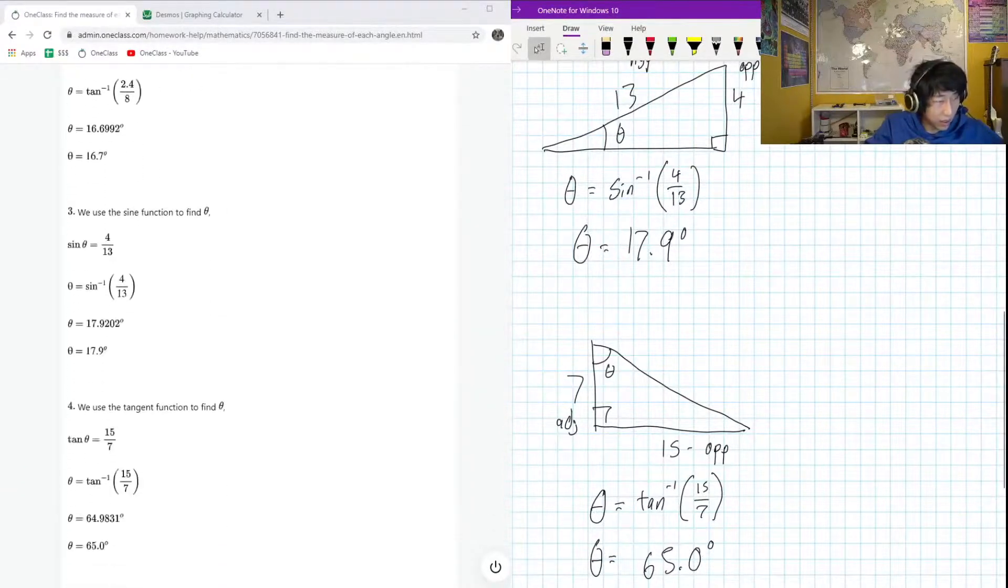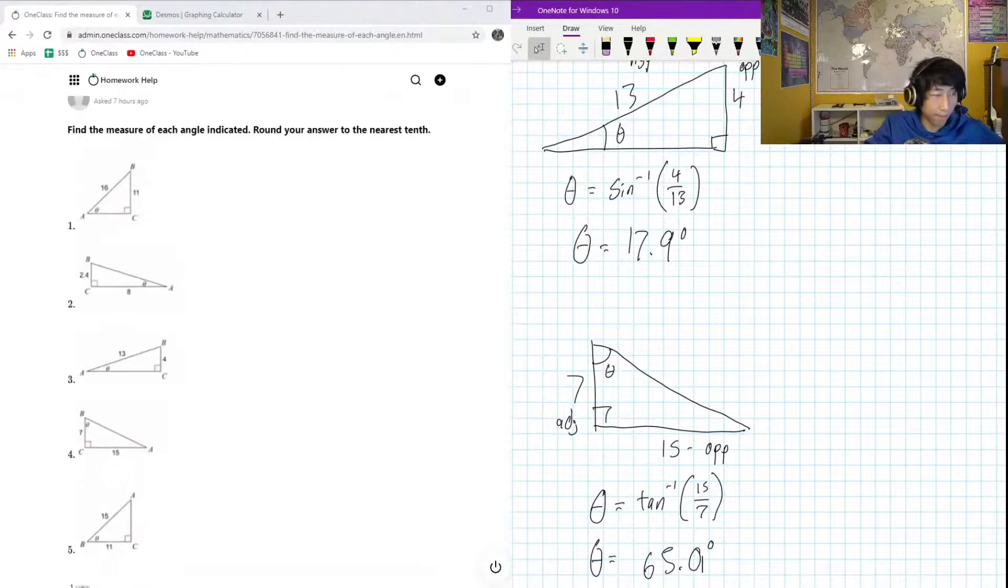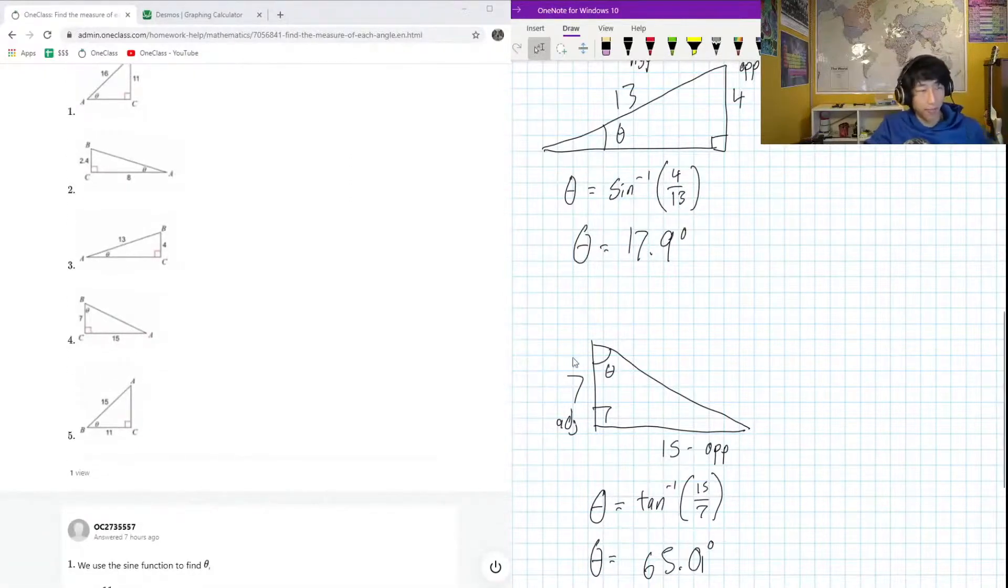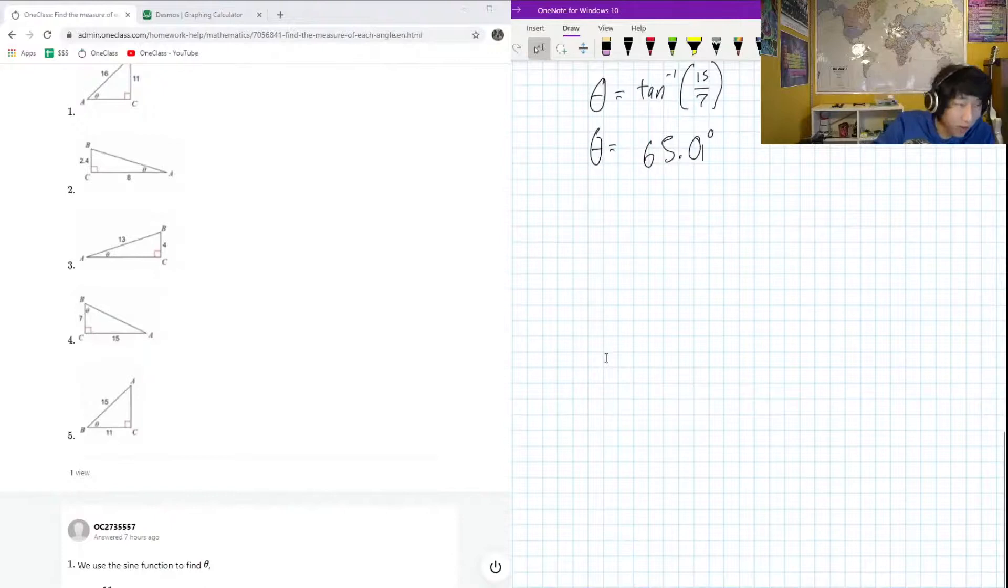And the last one, the last one is a triangle that looks like this. Our angle is here, that's our theta, we have a hypotenuse and that's 15.